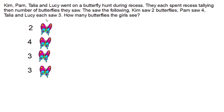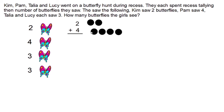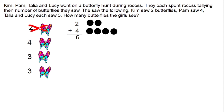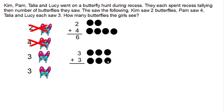The first thing we're going to do is figure out how many butterflies Kim and Pam collected together. Kim had two and Pam had four, so let's solve that part of the problem: two plus four. Using the five frames as my picture, I count one, two, three, four, five, six. So far I've accounted for Kim and Pam's butterflies. Now let's deal with Talia and Lucy — they each have three butterflies, so between the two of them: three plus three is one, two, three, four, five, six. Three plus three is just another way of making six, so they had six between them as well.